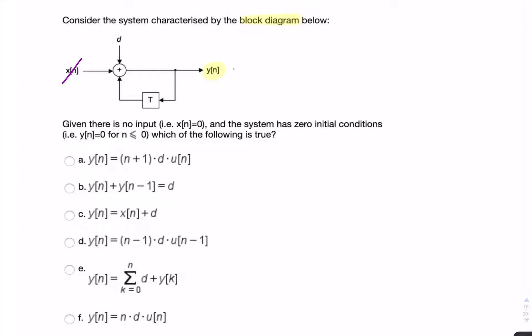So we can simply write y of n as x of n, which we'll later replace with 0, plus d, some constant d, plus y of n minus 1. That's the result of a delay, a one-sample delay on y of n.